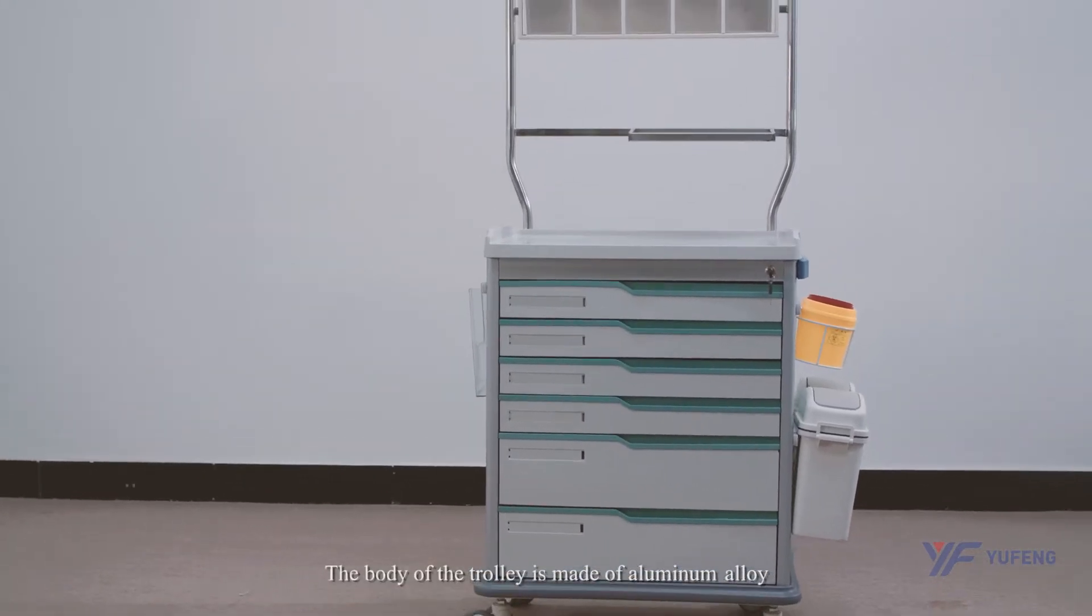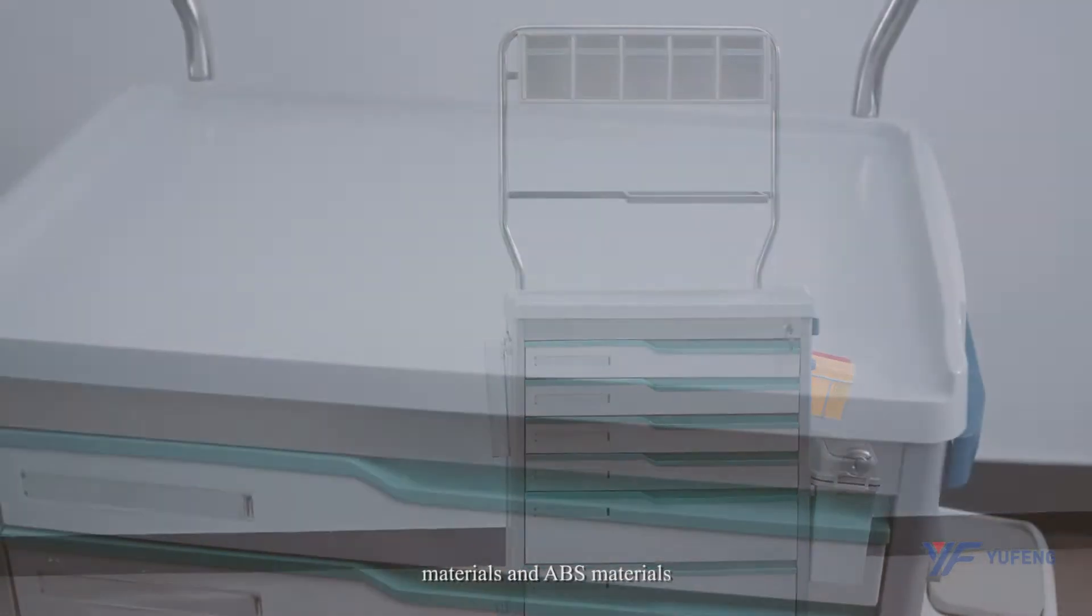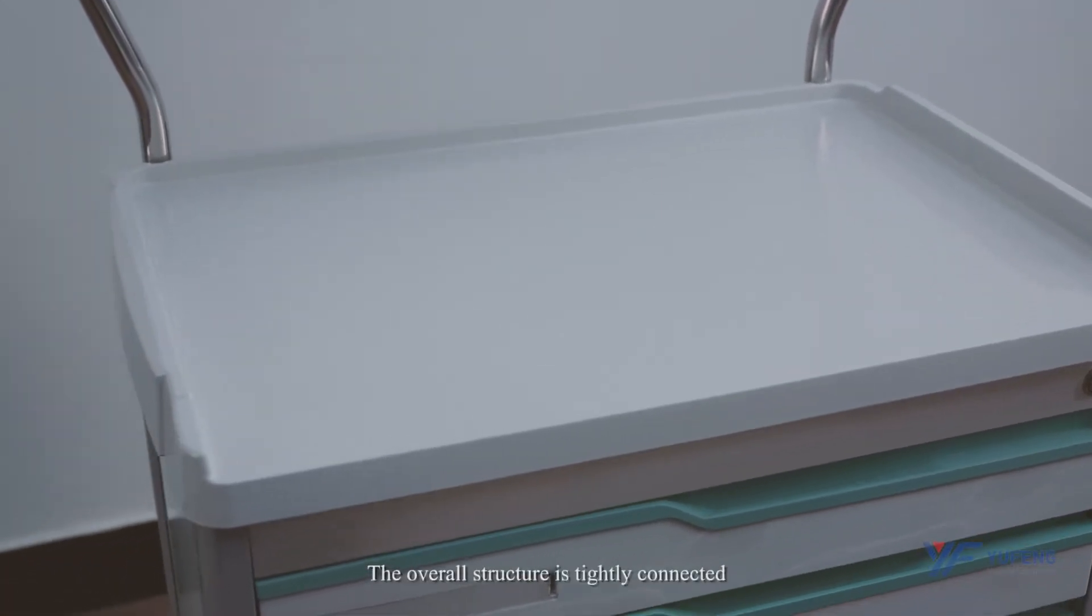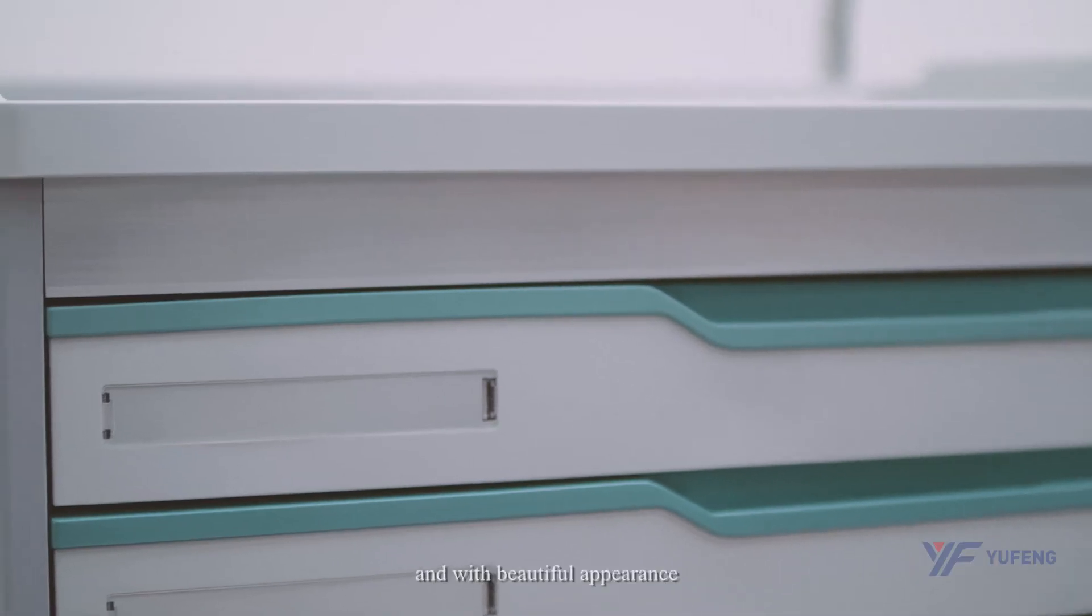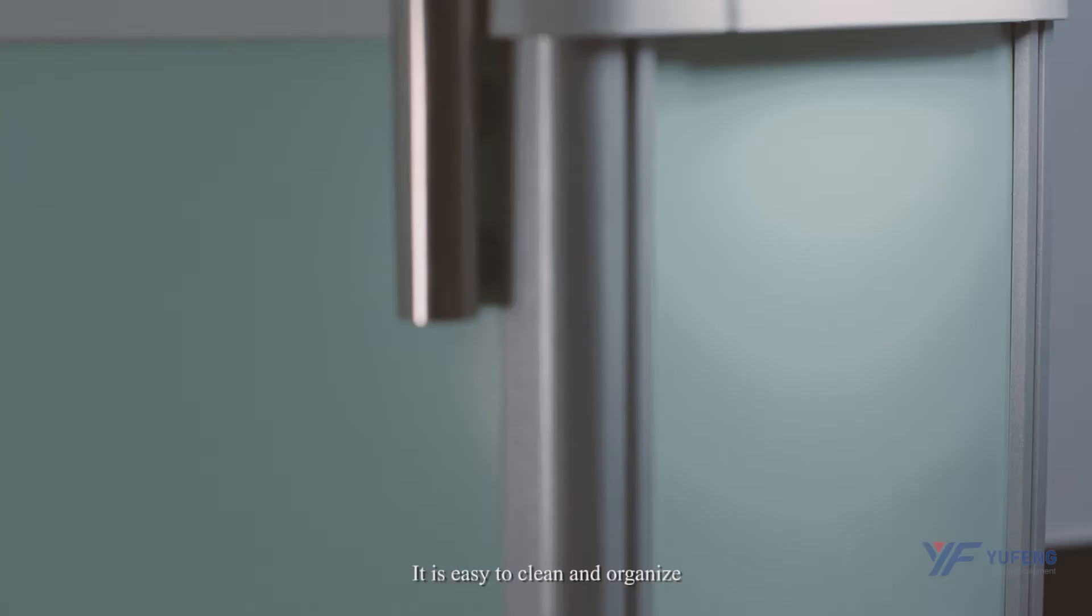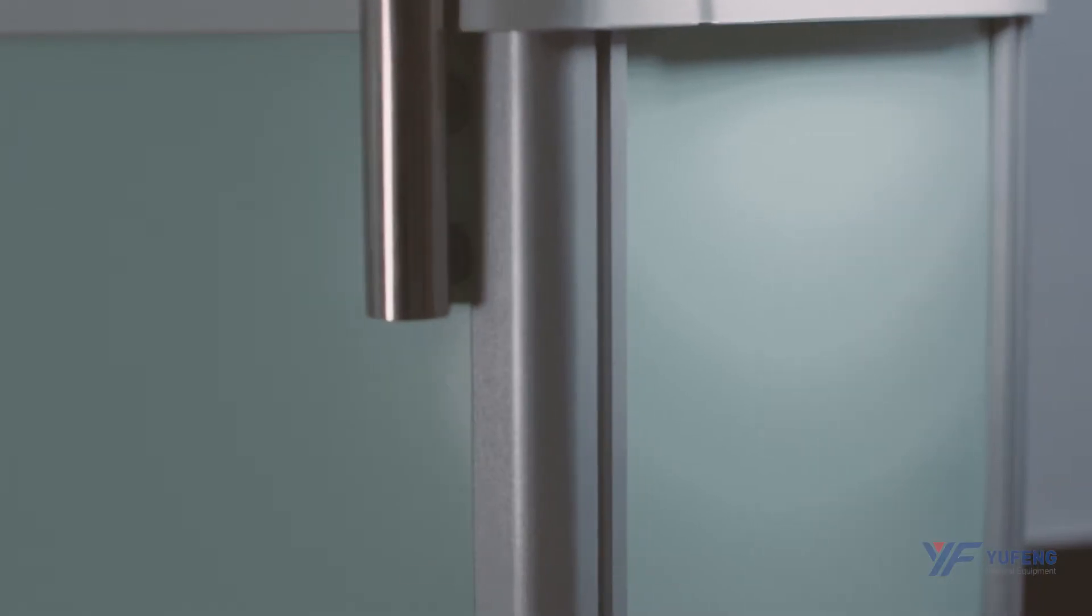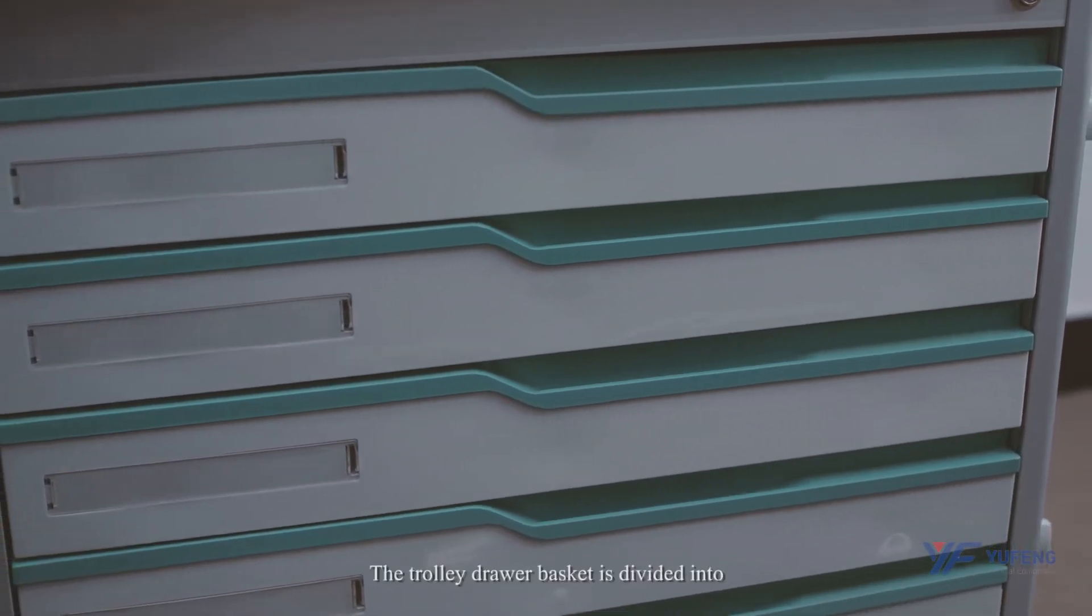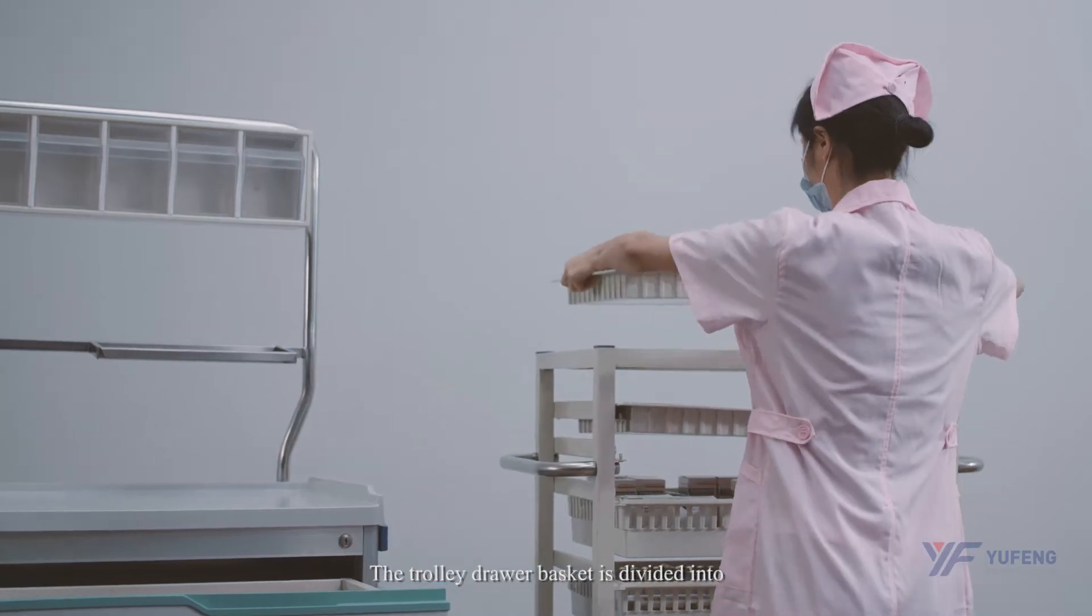The body of the trolley is made of aluminum alloy and ABS materials. The overall structure is tightly connected with a beautiful appearance. It is easy to clean and organize, offering anti-corrosion and anti-oxidation properties. The trolley drawer basket is divided